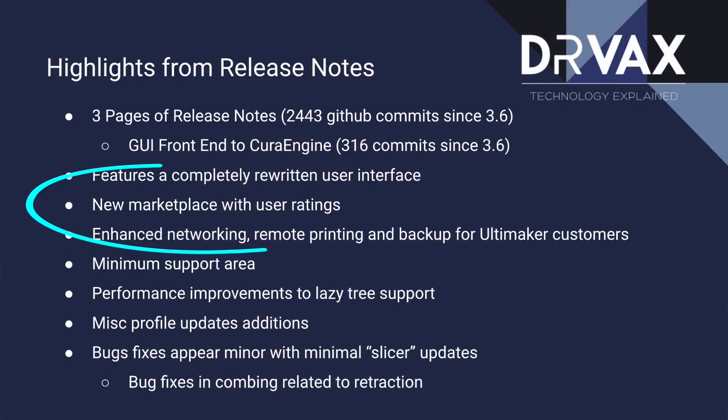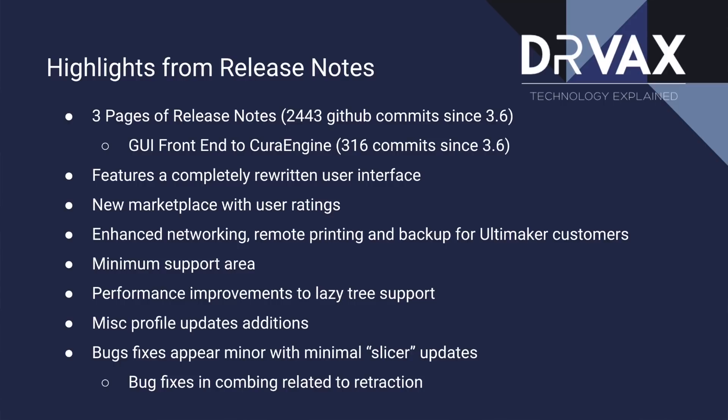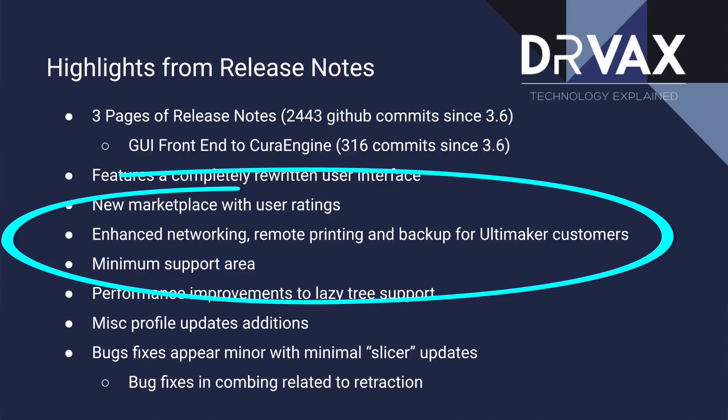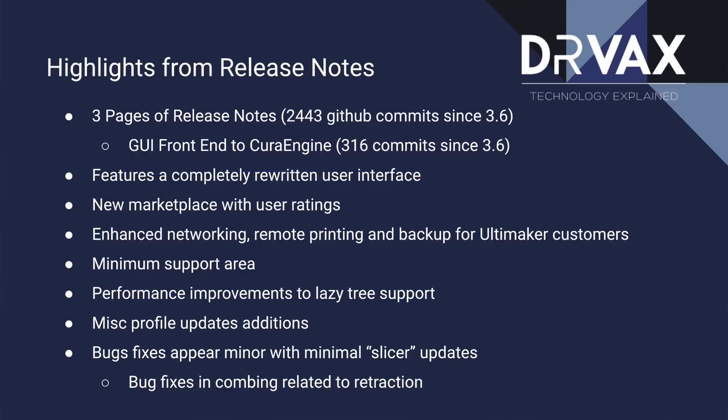The variables were not all identical — this was a one millimeter nozzle, whereas my earlier failures were with a 0.4 millimeter nozzle. But in general it does appear there were some bug fixes along the way. Primarily, this release focuses on user interface. In the marketplace area, there are now user reviews for additional plugins and extensions for Cura — very nice. They've also enhanced networking, remote printing, and backup for Ultimaker 3D printers and their customers, though that doesn't appear to impact the rest of the community very much.